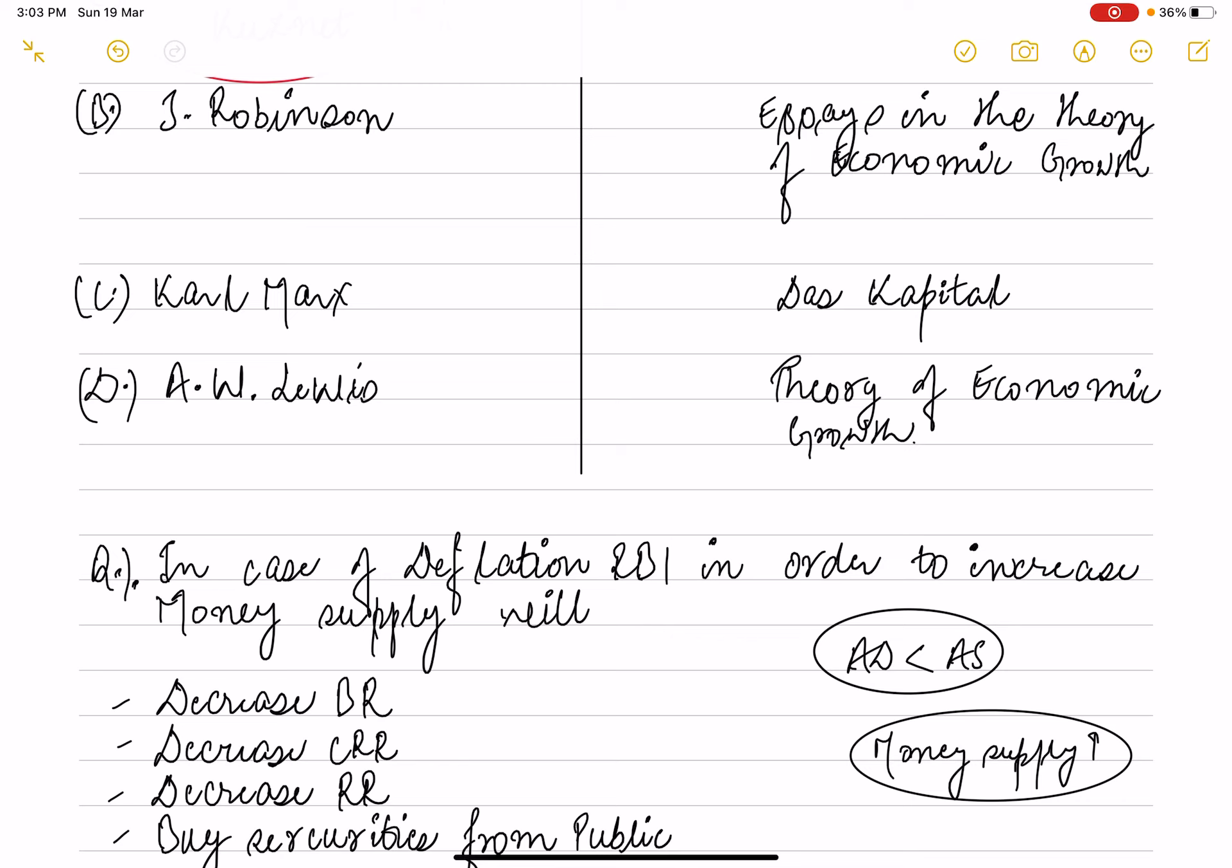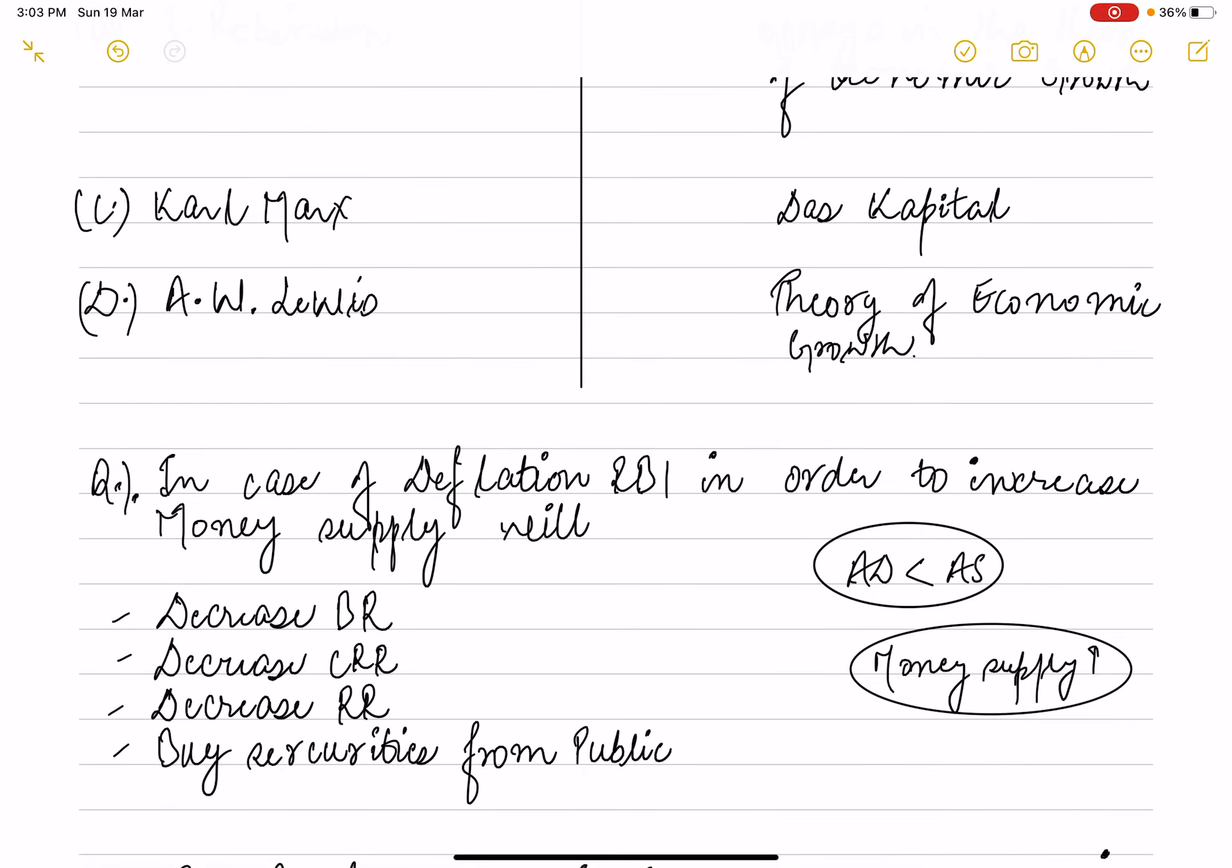In case of deflation, RBI in order to increase money supply. When deflation, it means aggregate demand falls compared to aggregate supply. So in this case if we increase money supply, then what will happen? The bank rate will be reduced by RBI, CRR will be reduced, SLR will be reduced, which will increase money supply.